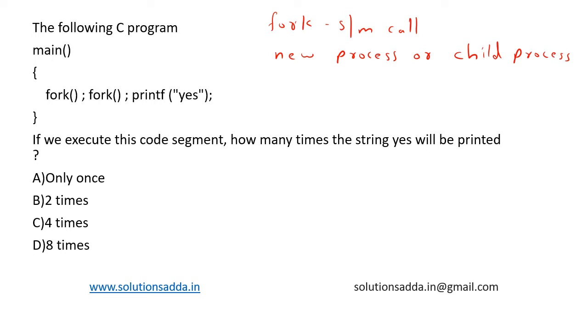So assume this is the process P1 and it has a code base: fork, fork, and yes is printed. Now when this statement is executed, it creates a new child process.